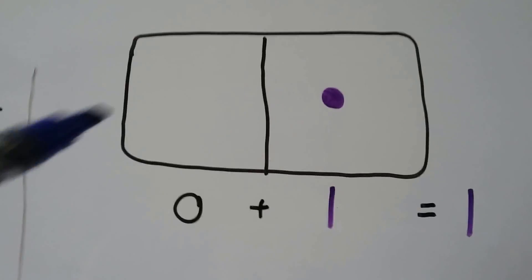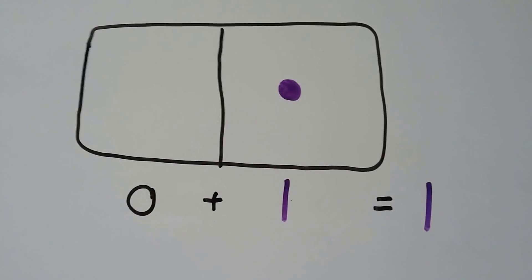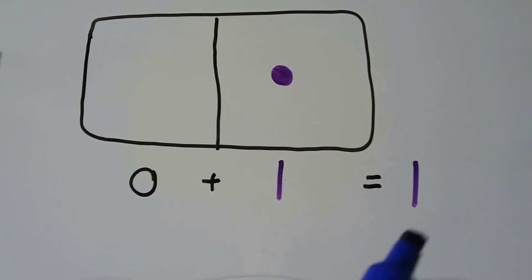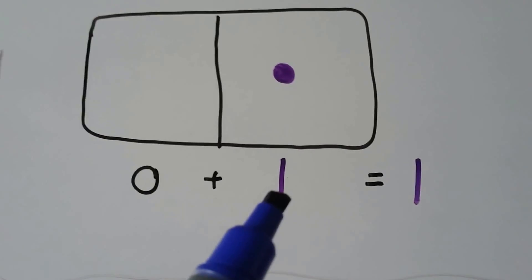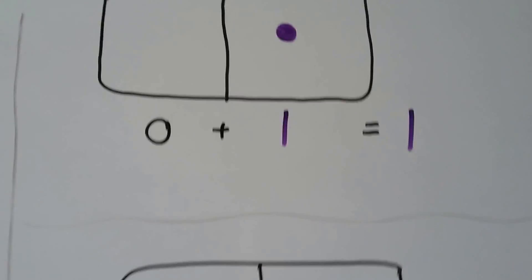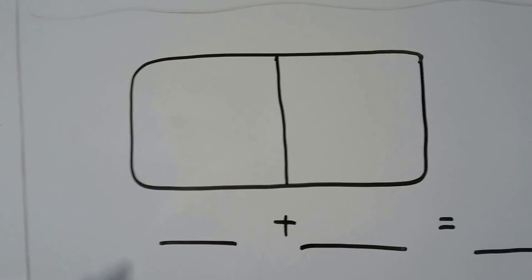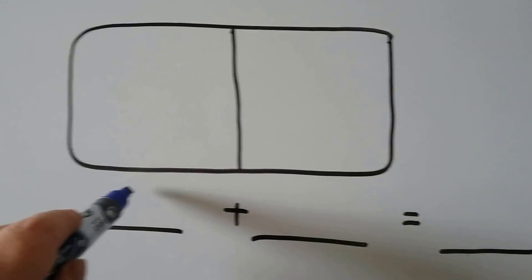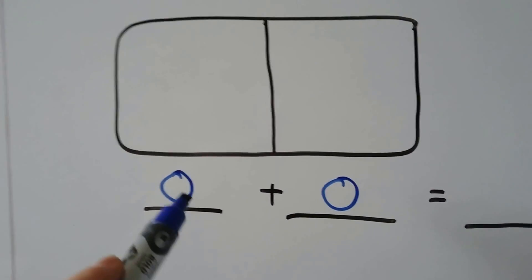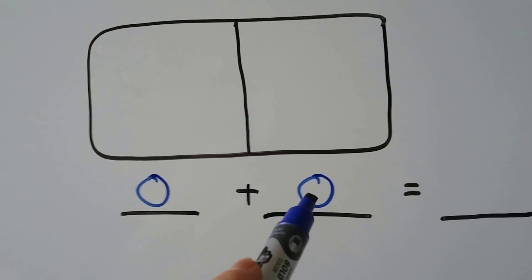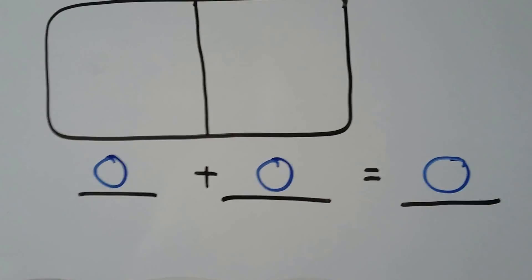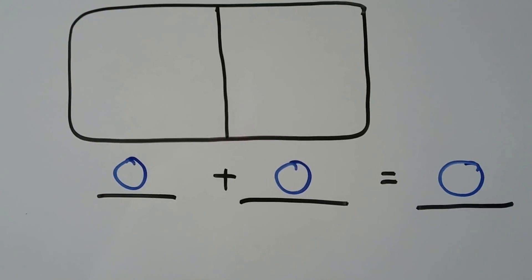Here we have no dots and one dot. Zero plus one is equal to one. The one stays the same when we add zero — it stays one. How many dots are here? No dots. How many dots are here? No dots. When we have zero plus zero, how many dots are there? Zero. Zero plus zero equals zero.